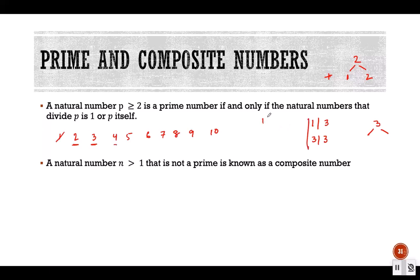Now consider 4: 1 divides 4, 2 divides 4, and 4 divides 4. Here we have 2 as a divisor which is not 1 or 4 itself. Since there is one more divisor other than 1 and the number itself, 4 is not a prime number.